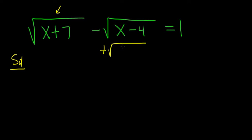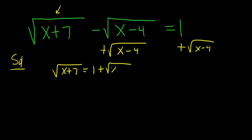So we'll solve for this one. We'll add the square root of x minus 4 to both sides. Plus square root x minus 4, plus square root x minus 4. So we're left with the square root of x plus 7 equals 1 plus the square root of x minus 4.